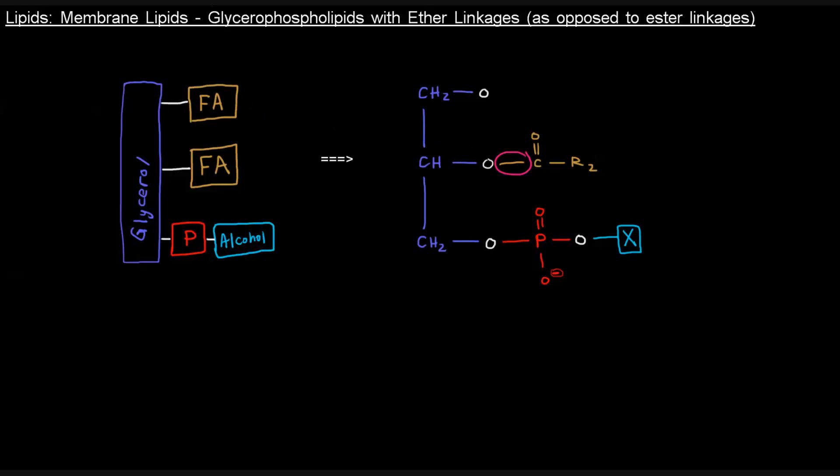But what if there's an ether linkage? Ethers, as you may or may not know, look like this. They're basically the carbon analogs of water, right? Water looks like this. It's bent structure looks like that. So if you replace those hydrogens with carbon chains, you have what's called an ether, an ether functional group.